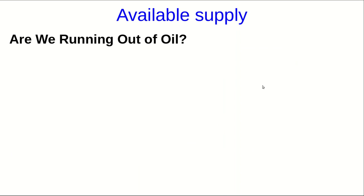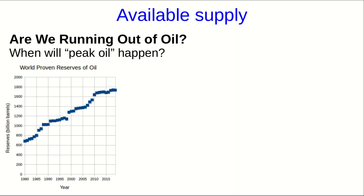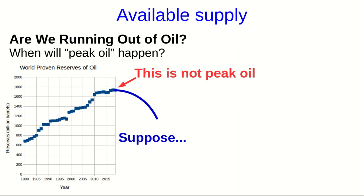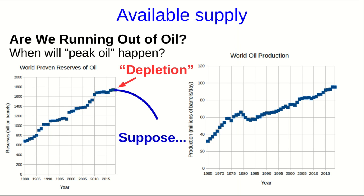Now that we understand a little bit more about oil reserves, let's try to talk about the question everybody would like an answer to: are we running out of oil? Or, as this is often phrased, when will peak oil happen? We actually have to realize that proven reserves are not what we need to look at. Suppose proven reserves started to decline tomorrow — that's not what's meant by peak oil. That would technically be what we would call depletion. What people mean when they talk about peak oil is the peak in world oil production.